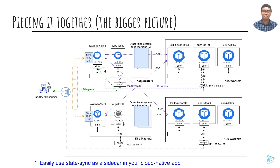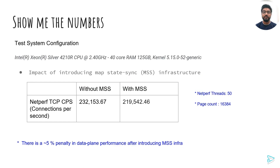Next we will talk about what kind of numbers we can expect from such a framework. Thanks Deep. I am Nikhil from NetLogs. We took some performance measurements of LogCLB with and without sync infrastructure deployed in a single node cluster. Without sync infrastructure, LogCLB peaked at 32k connections per second, but we saw a dip of just 5% when we integrated it with the sync infrastructure.